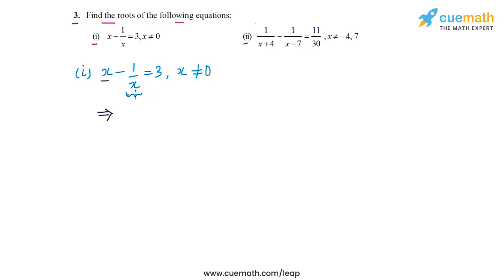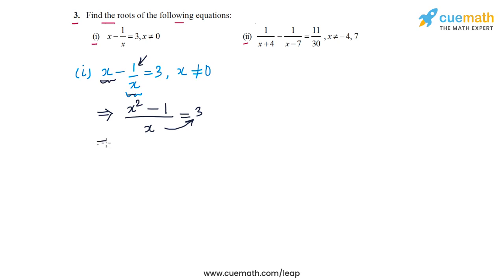We have x and 1/x, so if we take the LCM for the two terms on the left hand side, we get x in the denominator, x squared from the first term, and minus 1 from the numerator, giving us (x² - 1)/x = 3. Cross multiplying, we get x² - 1 = 3x, or x² - 3x - 1 = 0.